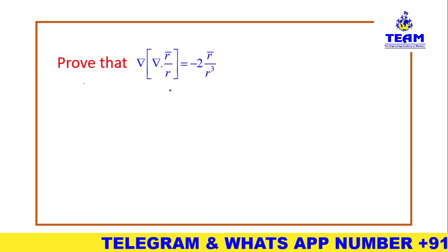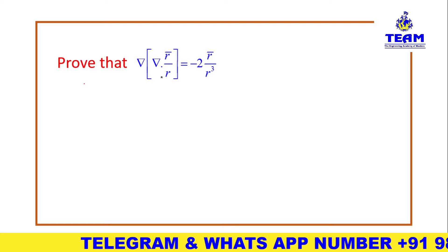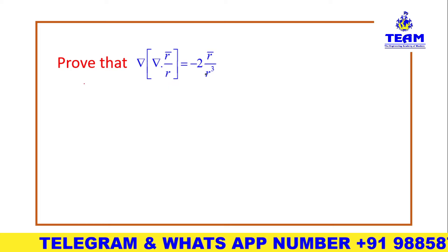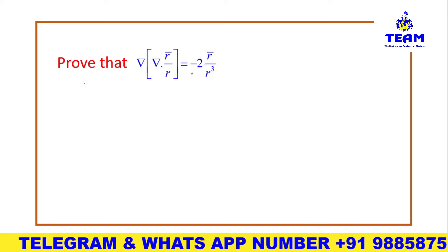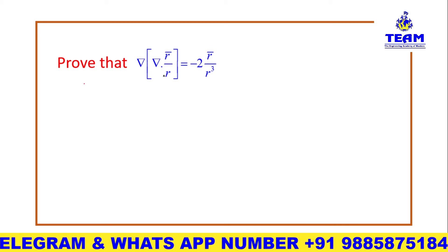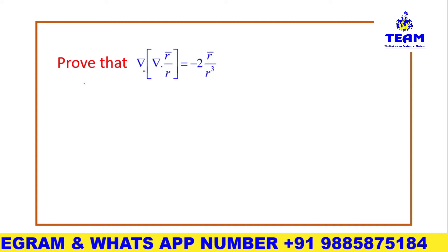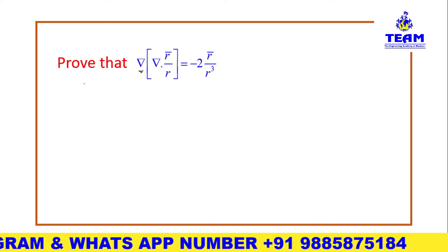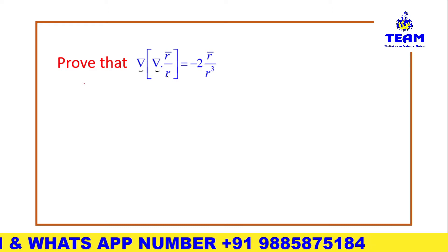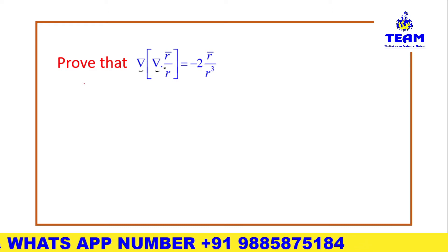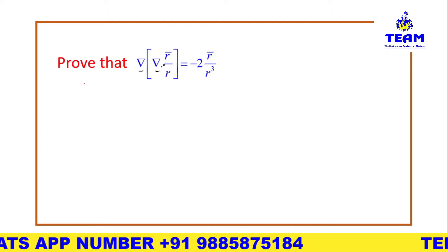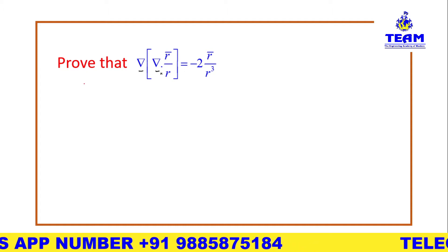By observation we can say these are applications of the vector differential operator. How to solve these types of problems: you have to remember the main thing is what is given on the left side. You are observing: first one is del, next del dot, third is r̄, fourth is r. If you know what del dot of a bracket and del of a bracket are, then you can do this very easily.